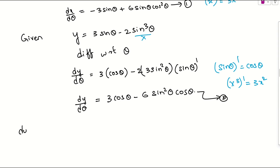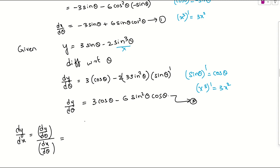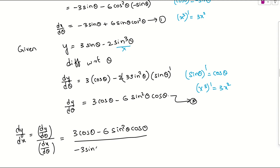We need to find dy/dx, which equals (dy/dθ) divided by (dx/dθ). The numerator dy/dθ is 3cosθ minus 6sin²θ·cosθ, and the denominator dx/dθ is minus 3sinθ plus 6sinθ·cos²θ.